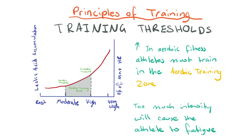For athletes to have an increase in aerobic fitness, they must train in the aerobic training zone. Looking at this graph, we have lactic acid accumulation on the left, percentage of maximum heart rate on the right, and intensity of training along the bottom. At rest, lactic acid is near zero, and as exercise increases, both lactic acid and heart rate rise. Moving between moderate and high intensity is where we're in the aerobic training zone.